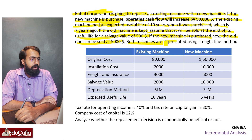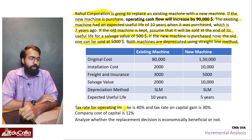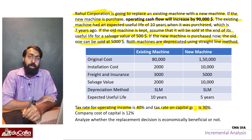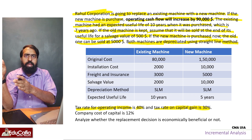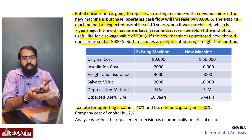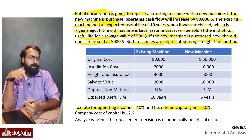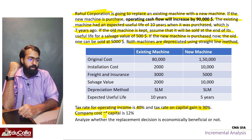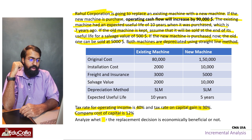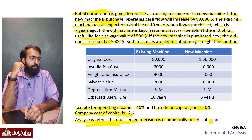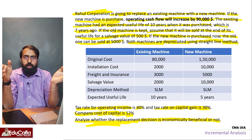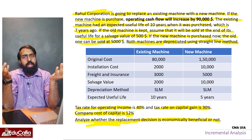Both machines are depreciated using the straight line method. Tax rate for operating income is 40%. Tax rate on capital gain is 30%. Analyze whether the replacement decision is economically beneficial or not. If we are replacing it, that company will benefit - so we can analyze it.